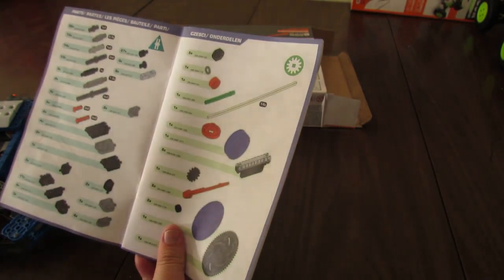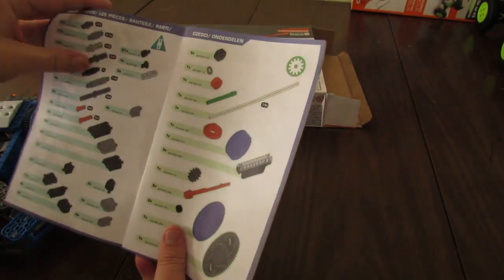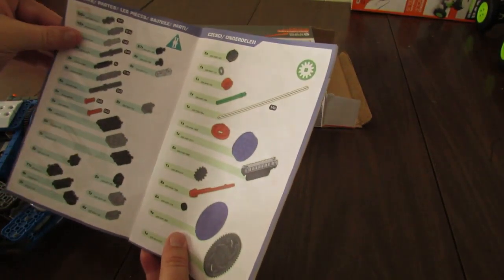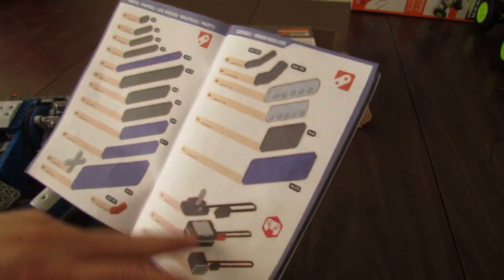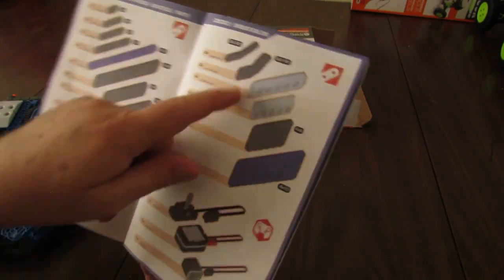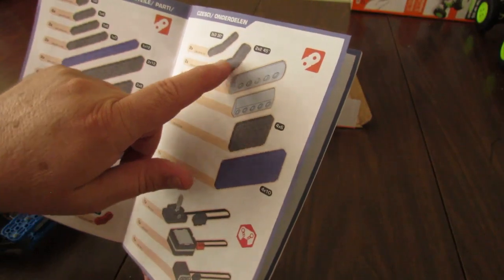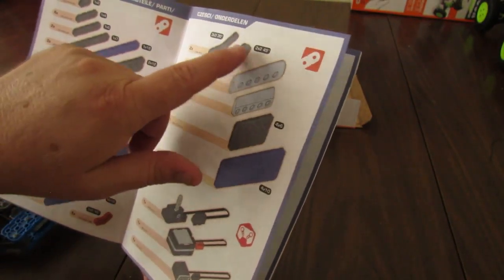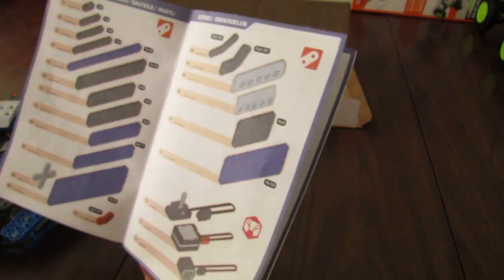I think most everything else is a part that's been around, other than the electronics. This 2x4 2x2 45-degree bent beam was in one of the sets from last year.